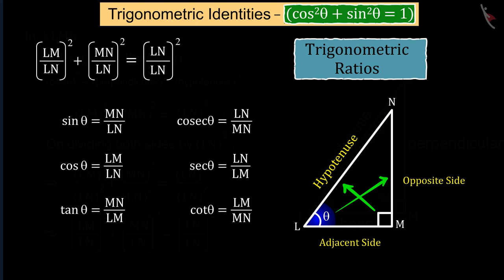With the help of theta angle, we can tell that the first term on the left side is the trigonometric ratio of the square of cos theta and the second term is the square of sin theta, while the right side is equal to 1.